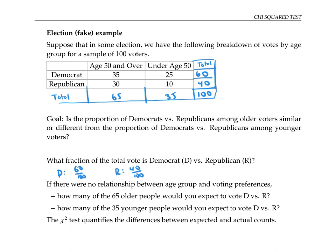If there were absolutely no relationship between age group and voting preferences, then how many of these 65 older voters would we expect to vote Democrat? Well, since 60% of the total vote is Democrat, we'd expect 60% of those 65 older voters to vote Democrat. In other words, the Democratic vote, we would expect to be 60 out of 100 times 65 voters, which is 39 voters.